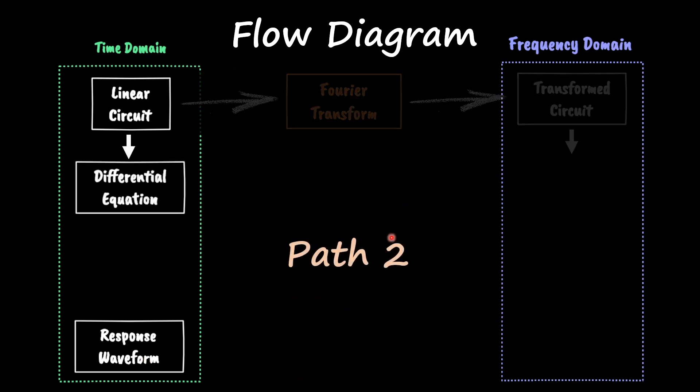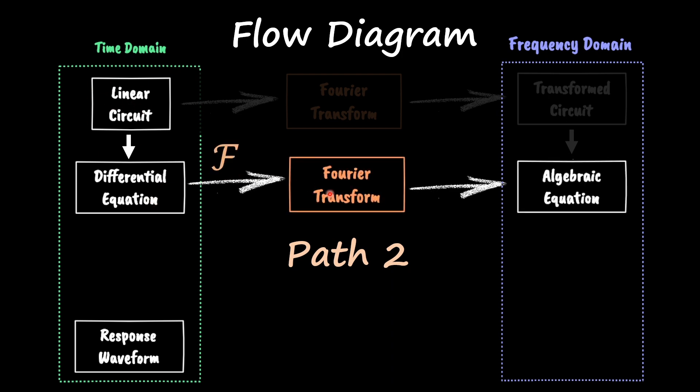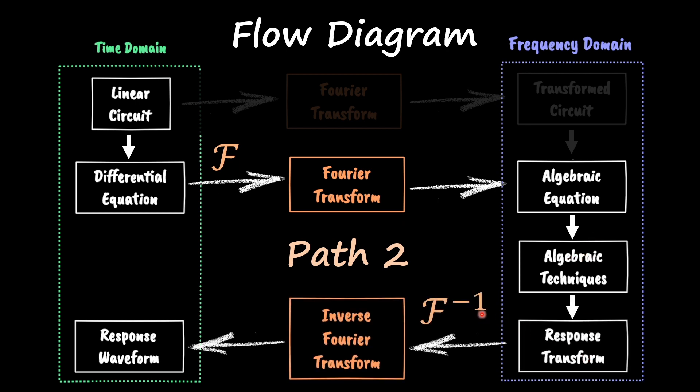The second path is to take the differential equation out of our linear circuit and now apply the Fourier transform on that differential equation to go to the frequency domain. And then the steps from here on are similar to what we did for path number one. We massage this equation so we can put it in that partial fraction expansion format. It's friendly then to apply the inverse Fourier transform to get our waveform.